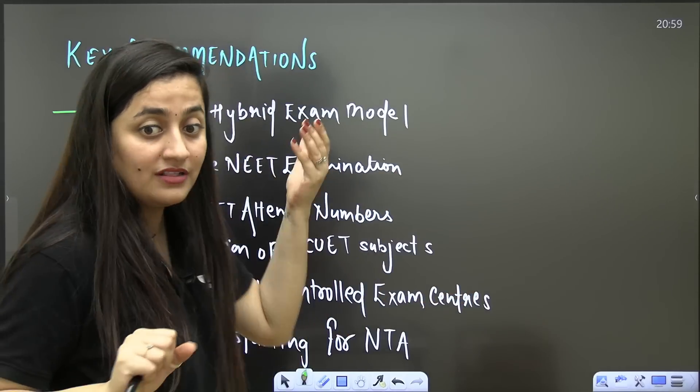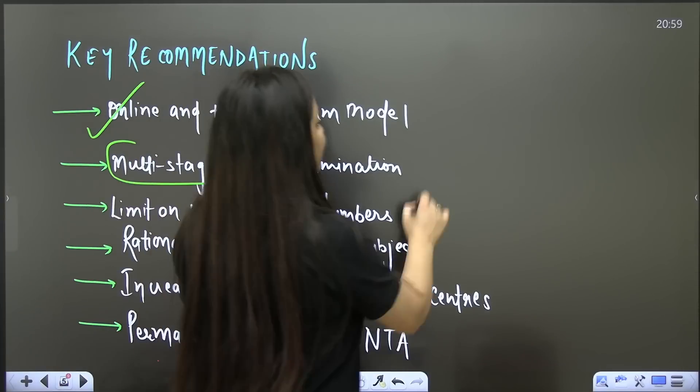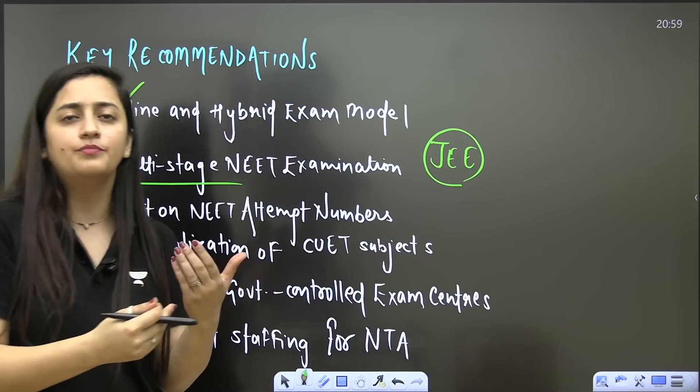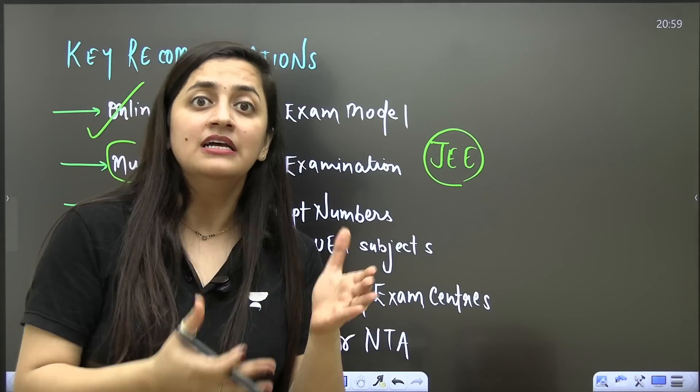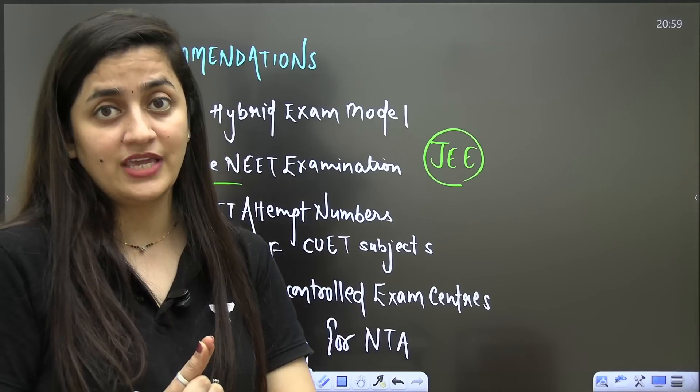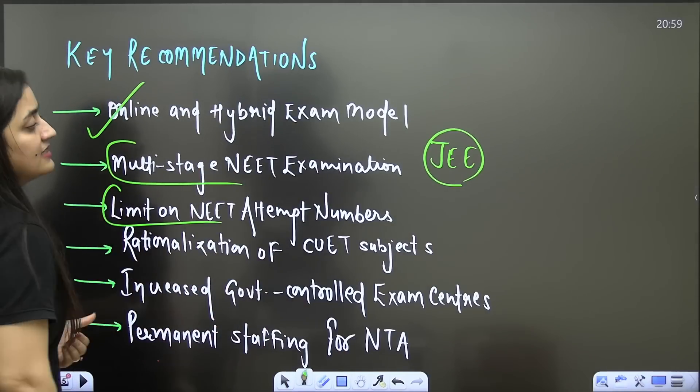The multi-stage NEET examination, just like JEE. Just like your JEE, we have the Mains and Advanced level. Same things should be there for the NEET examination as well. Plus in JEE you know that they take it twice, so that kind of thing we can think of. Because the number of aspirants is more, there should be a limit on the NEET attempt numbers. You know there is no upper age limit and no limit on the attempts. There should be a limit.